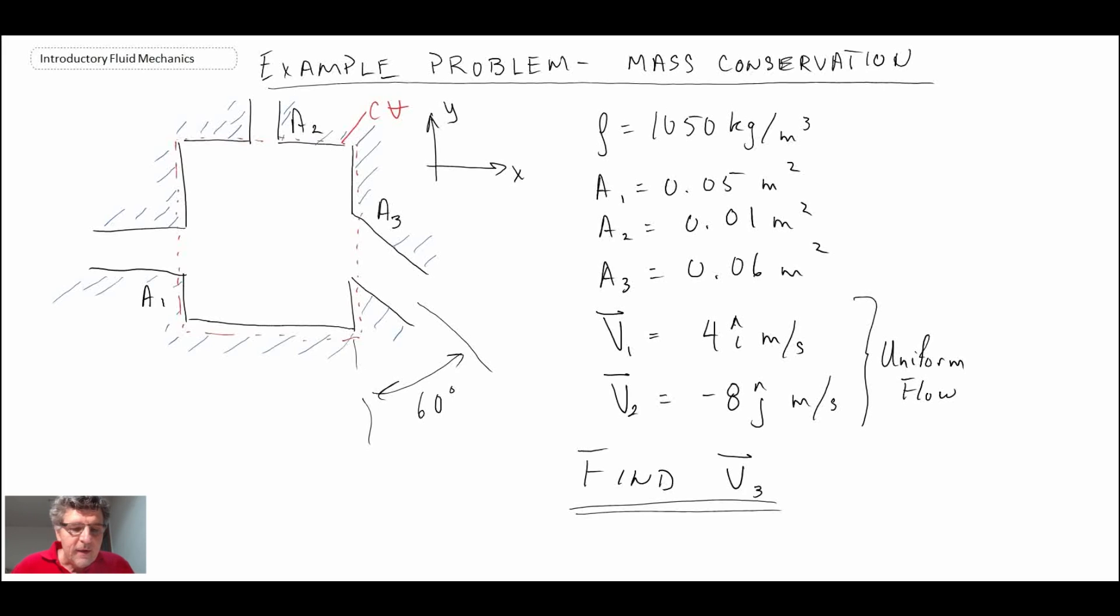So this is a pretty simple case of the continuity equation. Looking at the vectors that we have for the velocity field coming in, V1 applies to area 1 and it is a positive 4 in the I direction. So that tells us it is going in this direction. And then V2, that's coming in across area 2. It's a negative, so it's going down. So we have two streams coming in, and we then know that the third stream is going to be leaving at an angle because they show us that at 60 degrees.